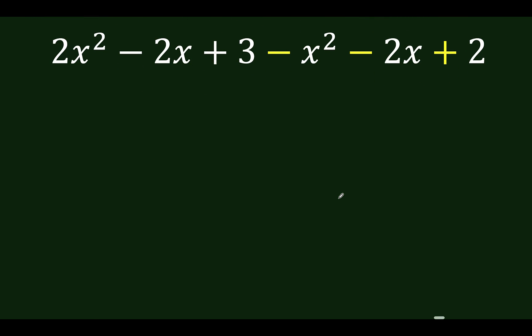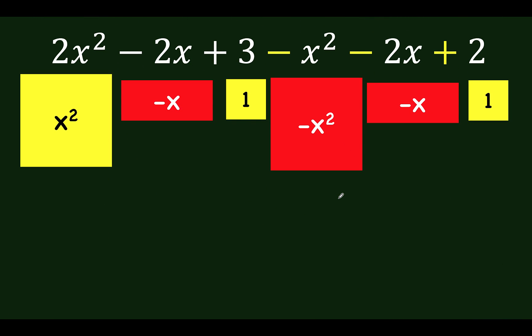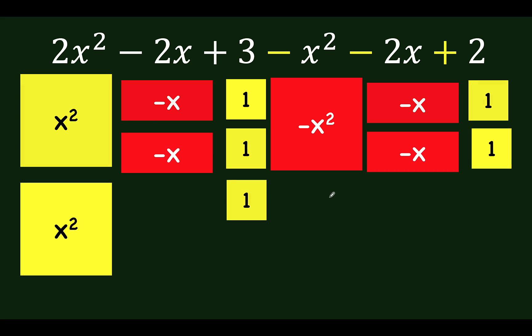So let's get our base shapes. Then replicate them as needed. Here, we need 2x squareds. So we have 2 squares here. Here, we need 2 negative x's. Here, there are 3 ones. There's only 1x squared here. There are 2 negative x's here and 2 positive ones.